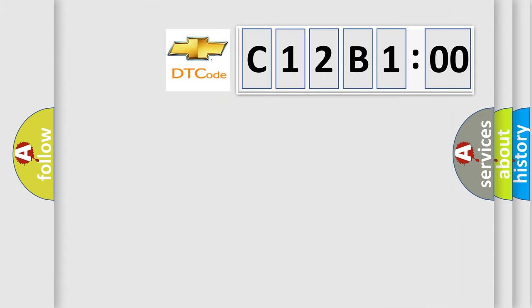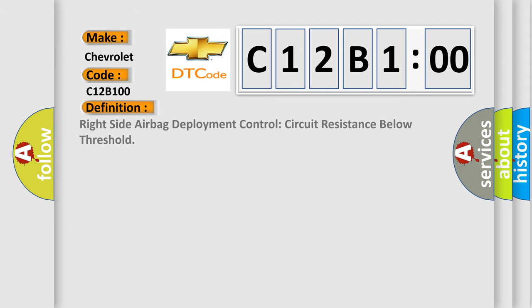So, what does the diagnostic trouble code C12B100 interpret specifically for Chevrolet car manufacturers? The basic definition is Right side airbag deployment control circuit resistance below threshold.